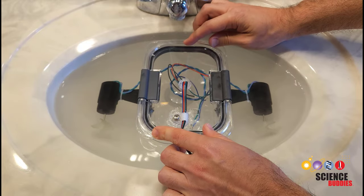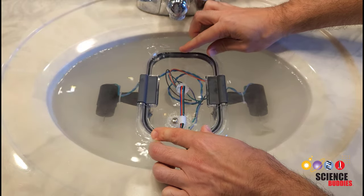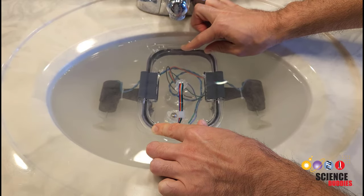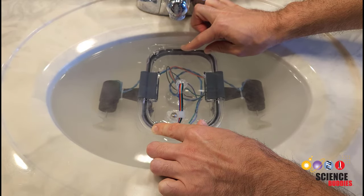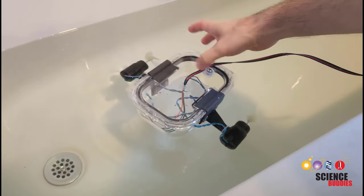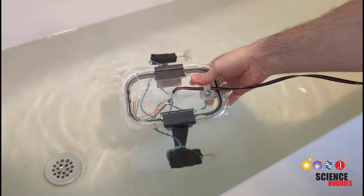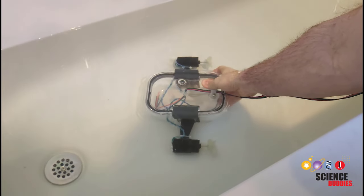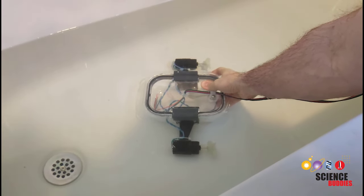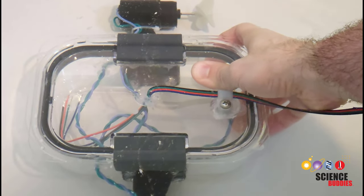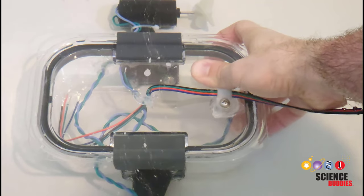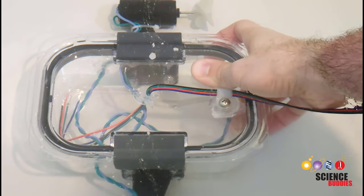Here, you will need to be careful to identify whether any leaks are coming from holes you drilled in the lid or from the seal between the lid and the container. Since water pressure increases with depth, it's a good idea to test in a deeper container if possible. Here, I've switched from a sink to a bathtub. I noticed that I was getting some water in the container after I removed it, but I couldn't tell where it was coming from, so I went back in for a closer look.